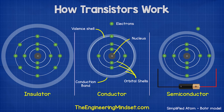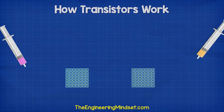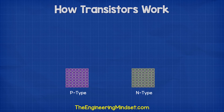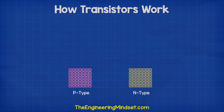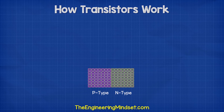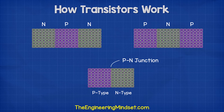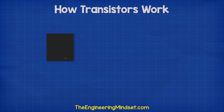Pure silicon has almost no free electrons. So what engineers do is dope the silicon with a small amount of another material, which changes its electrical properties. We call this P-type and N-type doping. We combine these materials to form the P-N junction, and we can sandwich these together to form an NPN or a PNP transistor.